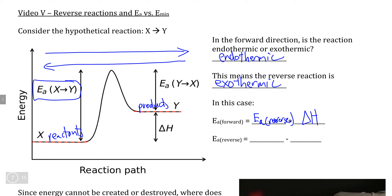Conversely, if we were looking at the reverse reaction, we can get EA of the reverse reaction by taking the activation energy of the forward reaction and subtracting delta H from that instead, as we can clearly see on this graph.